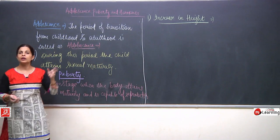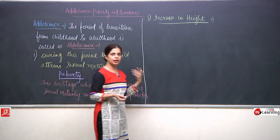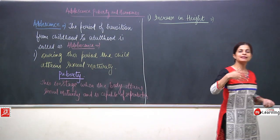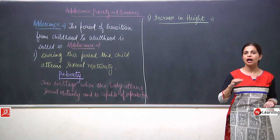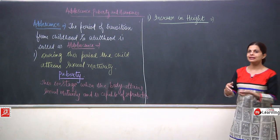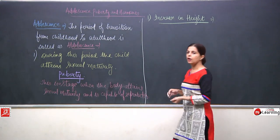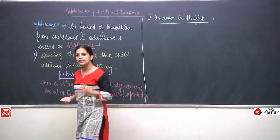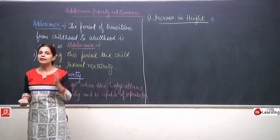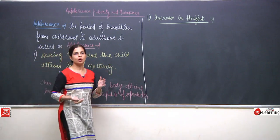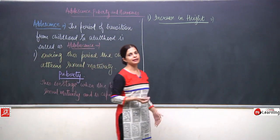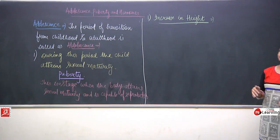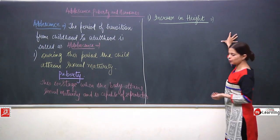Whatever changes are there can be seen till the age of 18. After 18, you cannot see an increase in height. This happens due to the increase in the length of the bones of the arms and the legs. There is a sudden increase in height, so this period is also known as growth spurt.